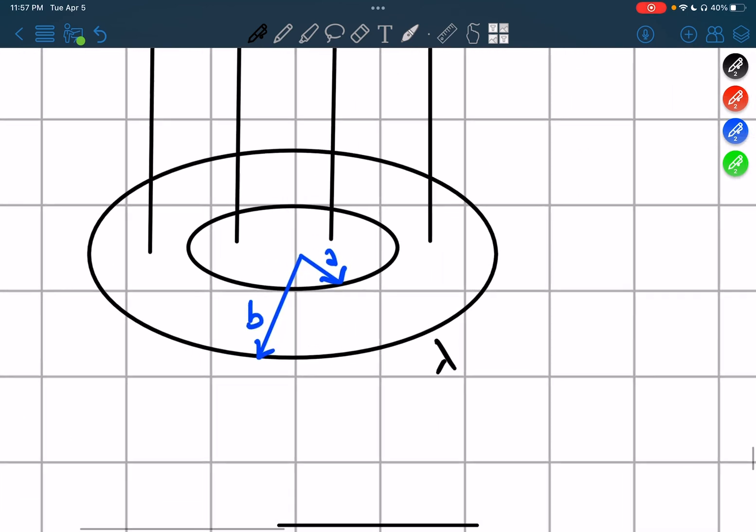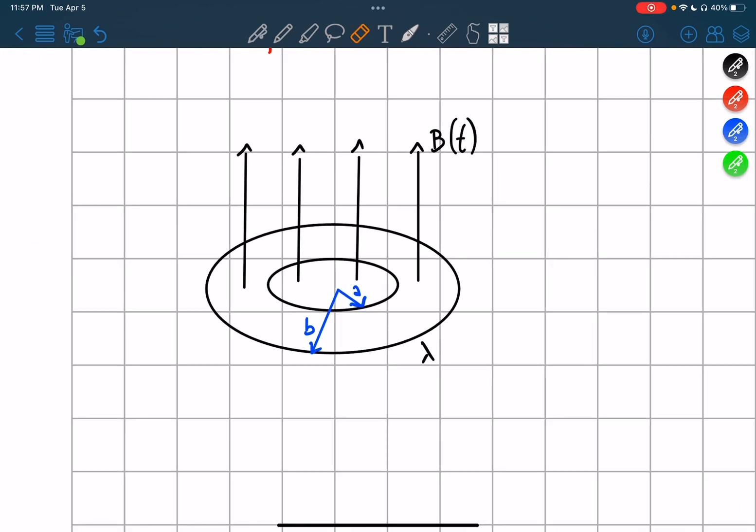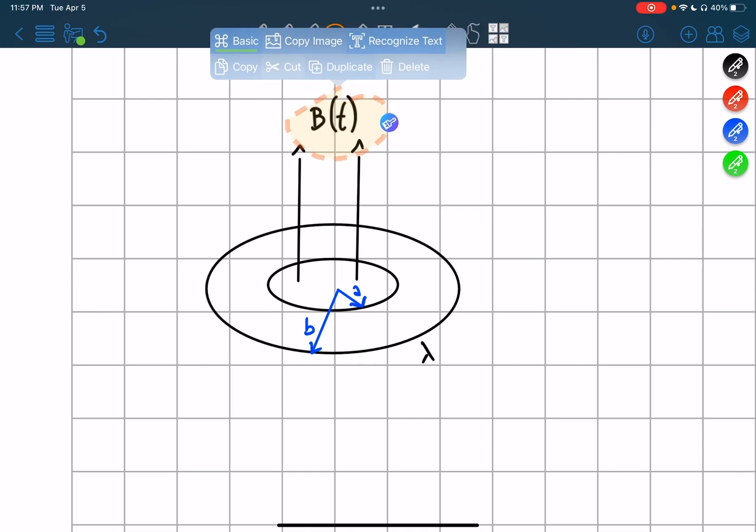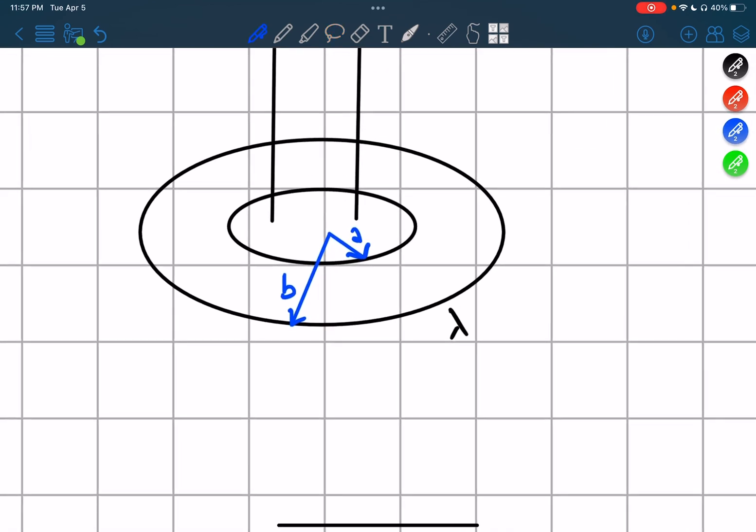In this case we have a loop that has a B field on the inside loop. And then we have the outside, which is just a ring. Let's call it a ring. The outside is just a ring.